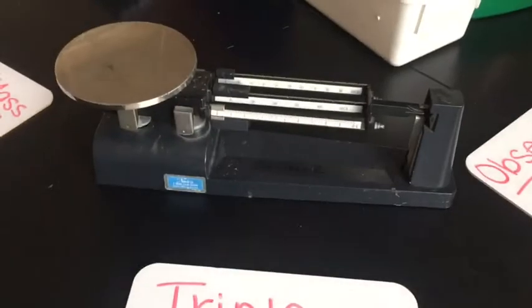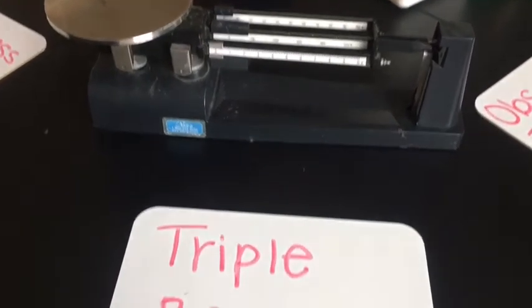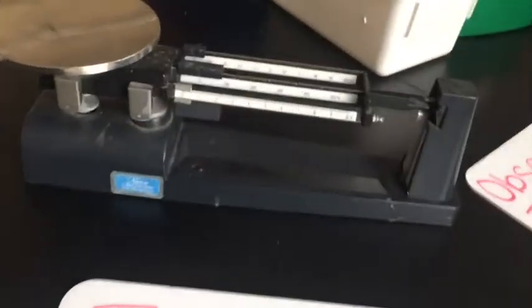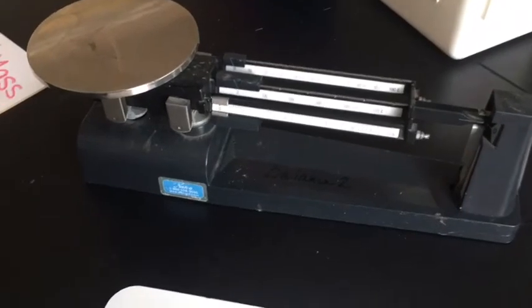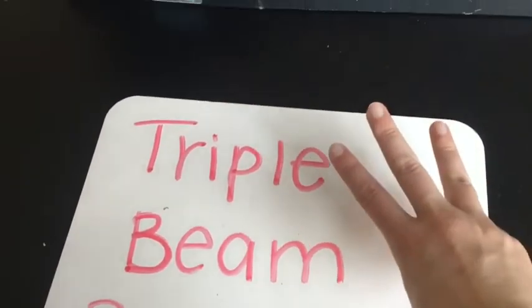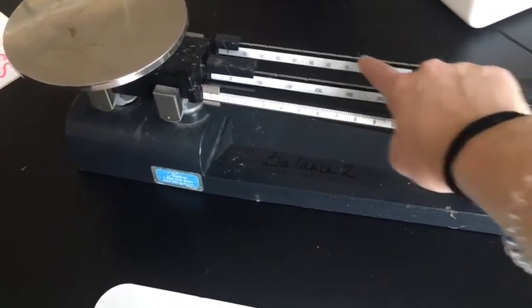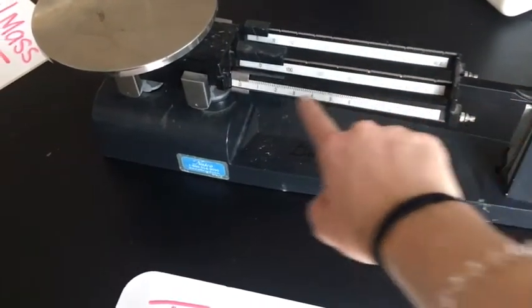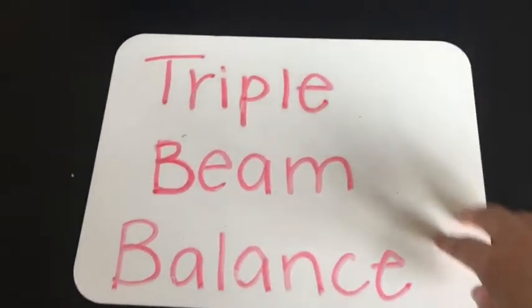Okay, and it's called a triple beam balance because it has three - that's where the triple comes from. Triple kind of means three times three beams: one, two, three. And then these are the beams, so triple beam. And then you could probably guess that it balances things, so it's a triple beam balance.